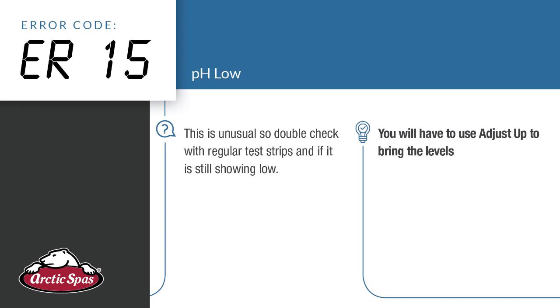ER15 — pH low. This is unusual, so double check with regular test strips. If it is still showing low, you'll have to use Adjust Up to bring the pH back up.